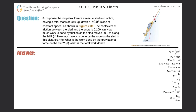Number 8. Suppose the ski patrol lowers a rescue sled and victim having a total mass of 90 kilograms down a 60-degree slope at constant speed, as shown in figure 7.36. The coefficient of friction between the sled and the snow is 0.1. Part (a): how much work is done by friction as the sled moves 30 meters along the hill?